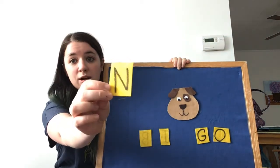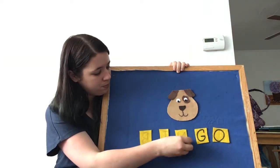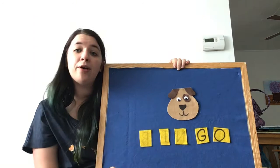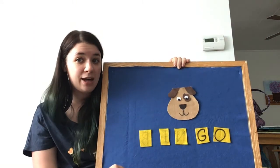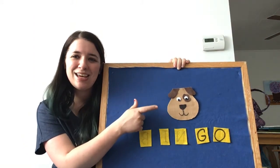This time, we're taking away letter N. There was a farmer who had a dog, and bingo was his name. Oh.